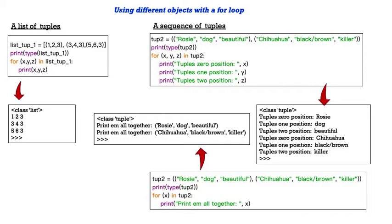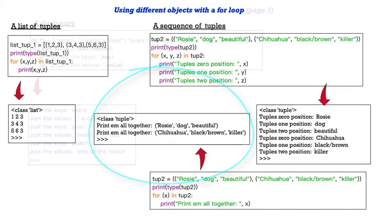Now, that's using three different iterators. What if we just used one? Tup 2, same thing. We have the same tuple here. So for X in tuple 2, and we're going to print them all together just using one iterator X, and you see what happens. It prints out the set of three, and then it prints out the second set of three.